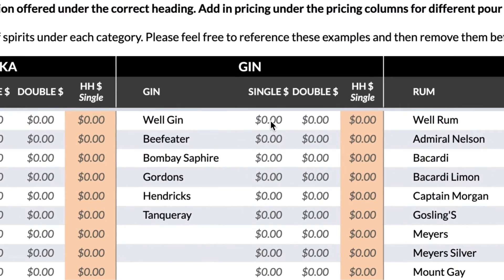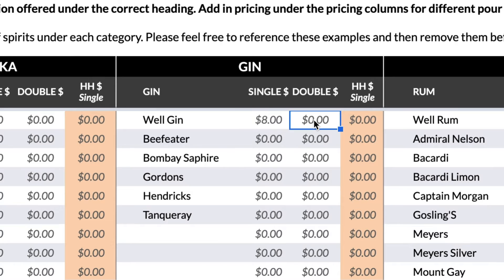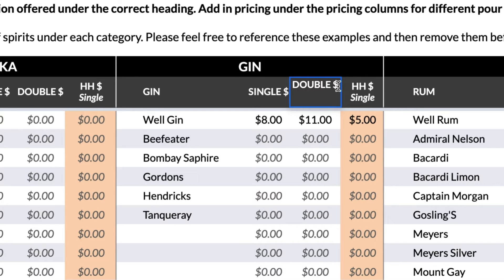Each liquor type gives you multiple pricing options. You can input prices for single pours, double pours, or the happy hour price for a single pour. You can customize these pour sizes if you'd like, or only offer a single price for each option. If your bar doesn't offer happy hour pricing, you can leave these columns blank.